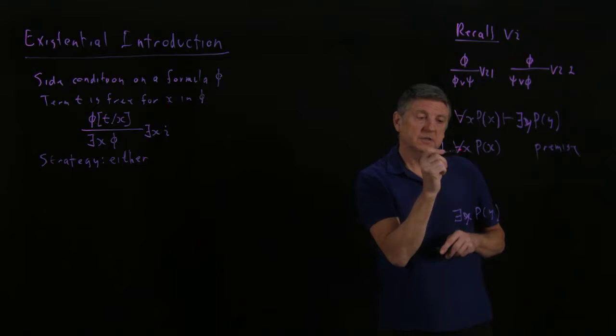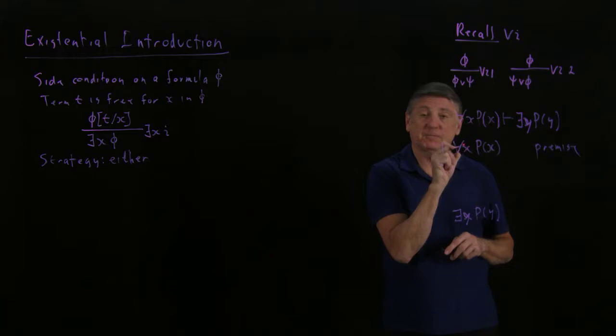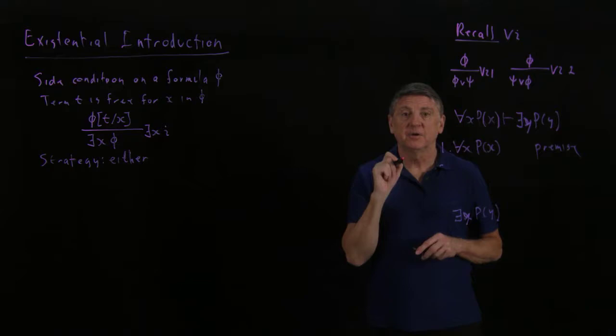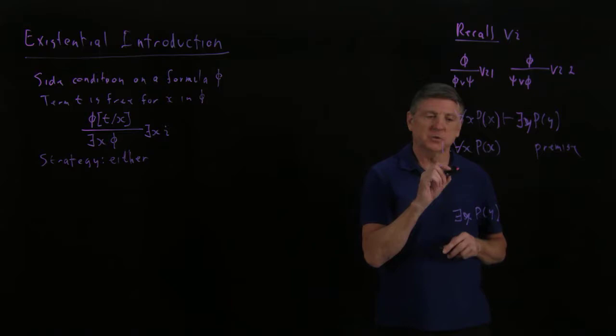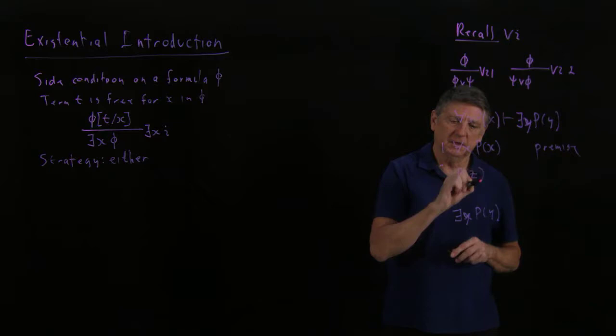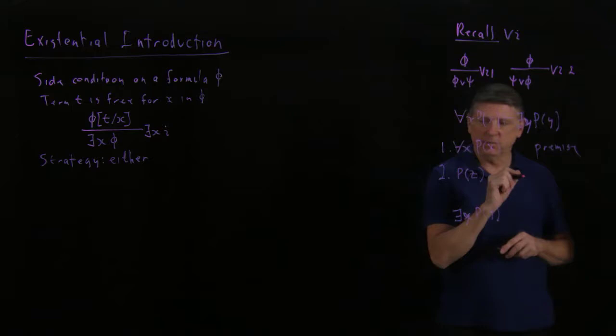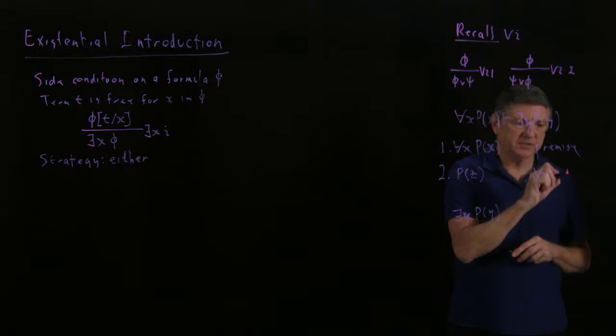Well, let's think about what variables we could do the substitution on. We can't substitute x for x, because that would violate the free for x condition of universal elimination. We couldn't have y, because y is mentioned in our goal. So let's suppose that we pick some other variable. Let's simply say that we'll assert that p of something is true. That can be a line in our proof, and that would come from universal elimination based on line one.